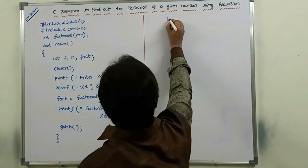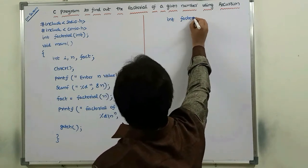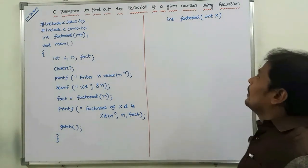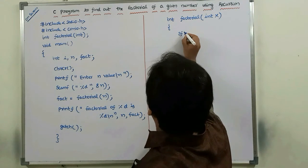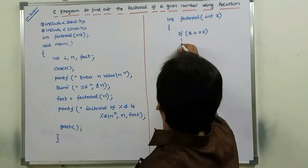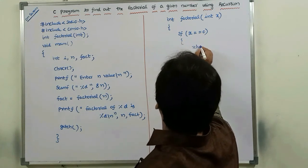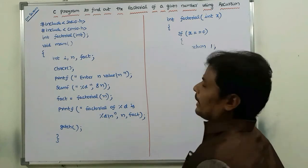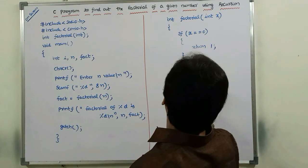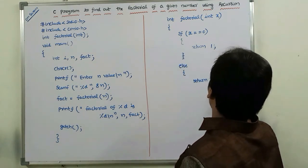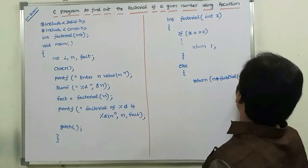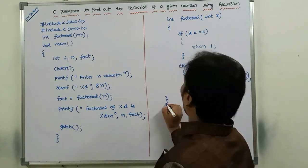int factorial(int x) — open brace. If x == 0, we are returning 1 — return 1. The if block is closed. Else, we are returning: return x * factorial(x - 1). The else block is closed and the called function is also closed.